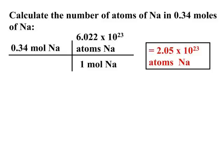Looking at this example problem: calculate the number of atoms of sodium in 0.34 moles of sodium. Starting with moles of sodium, you simply use the conversion factor so that moles cancel. One mole is equal to 6.022 times 10 to the 23rd atoms, and there's your final answer.